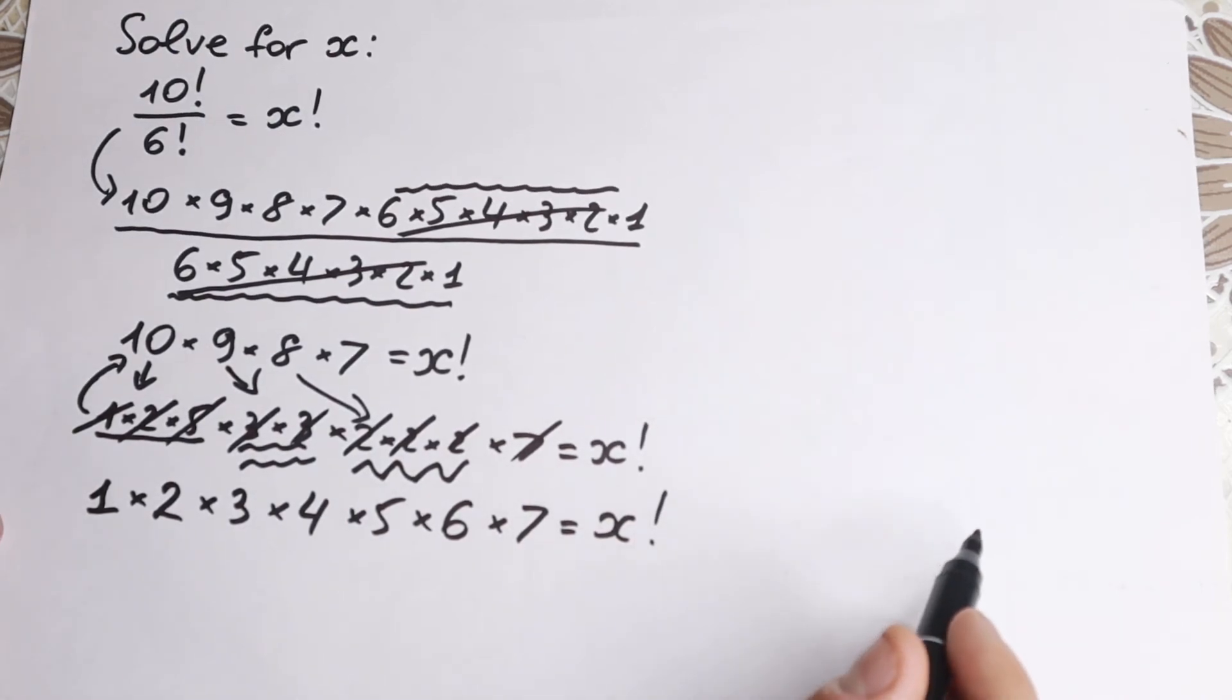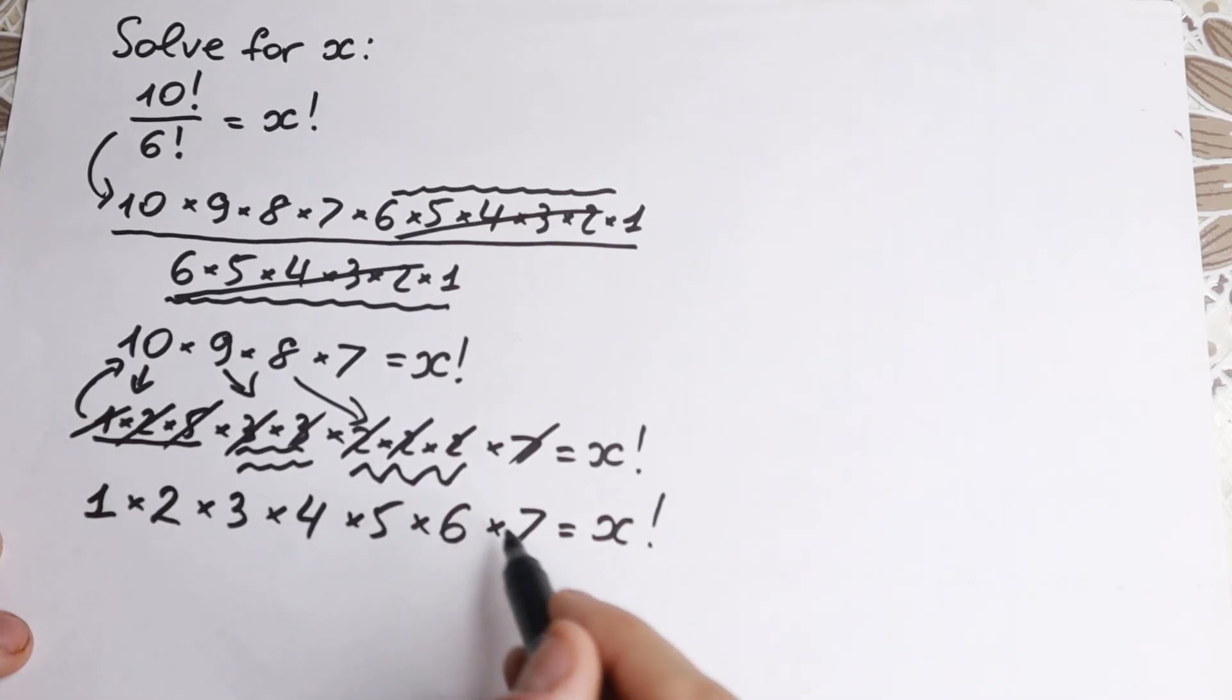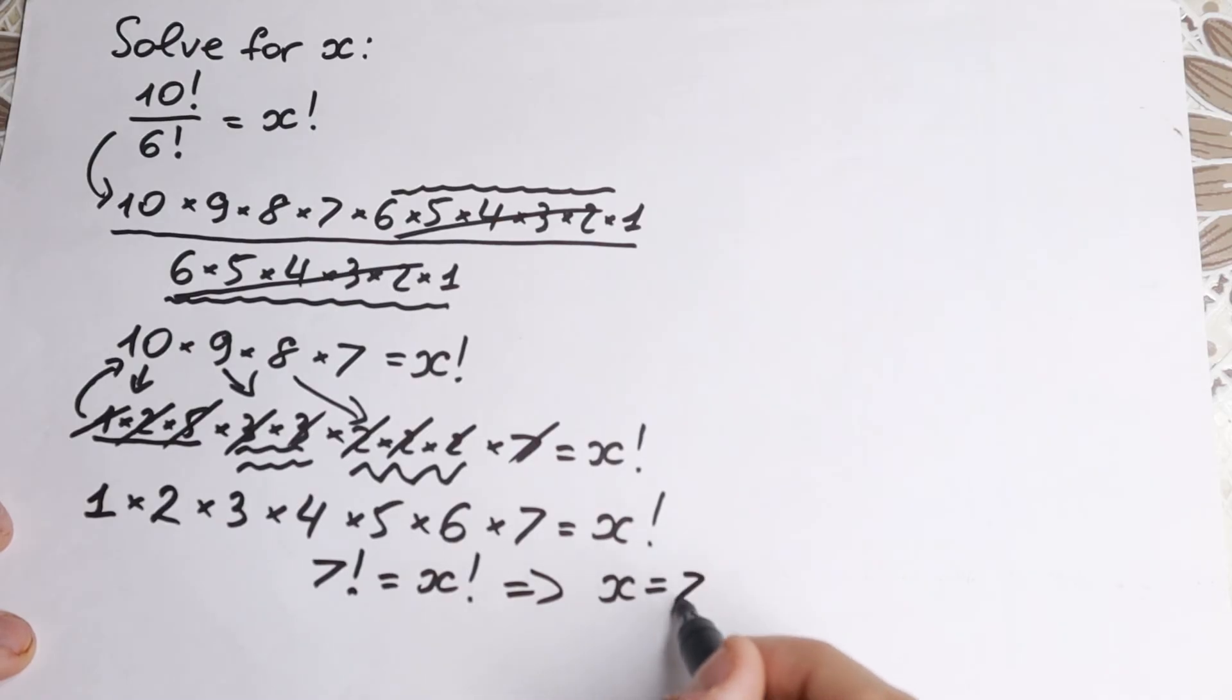And this is a brilliant expression because we can easily write this expression as 7 factorial. We have 1, 2, 3, 4, 5, 6, 7. So 7 factorial equal to x factorial. We have on the right hand side. And as a result, we can easily cancel factorial. Or we can easily by inspection see there is no other way that x equals 7.